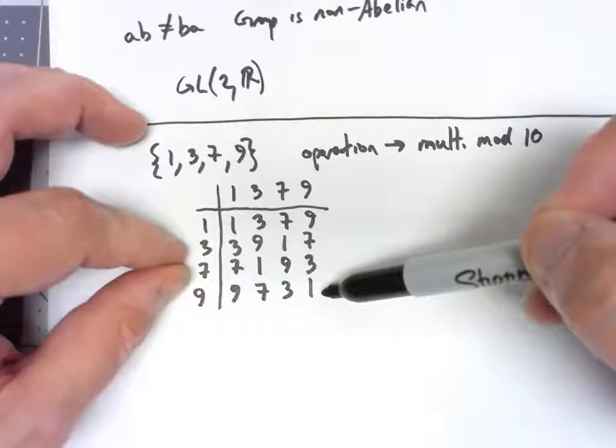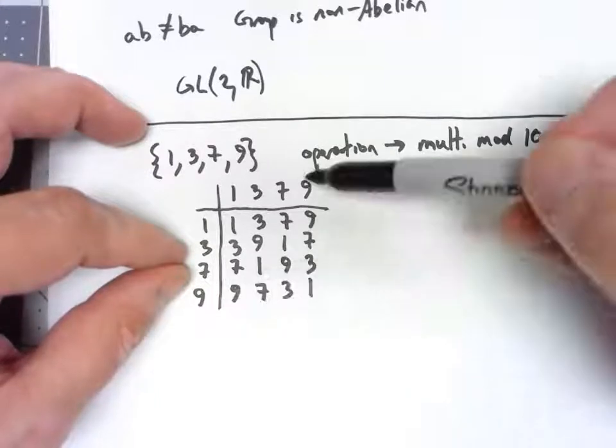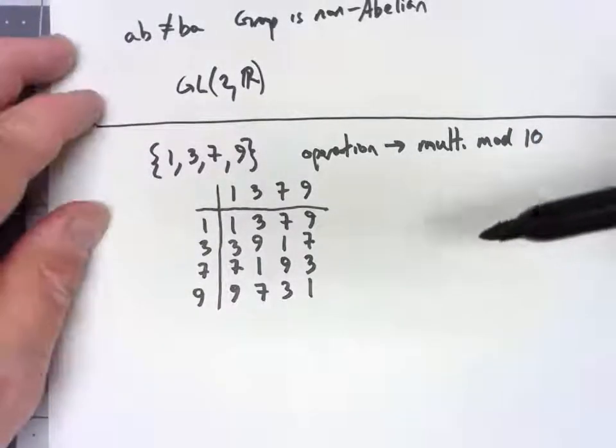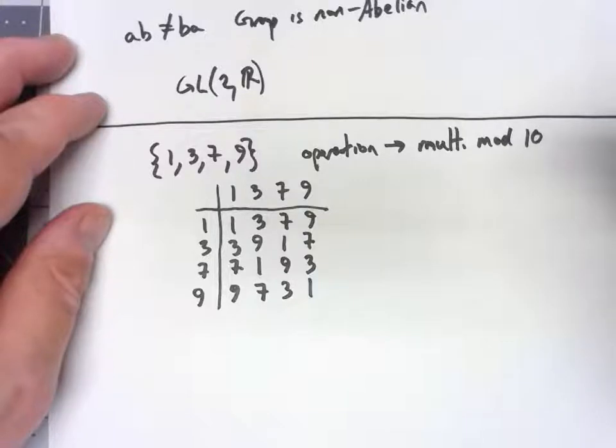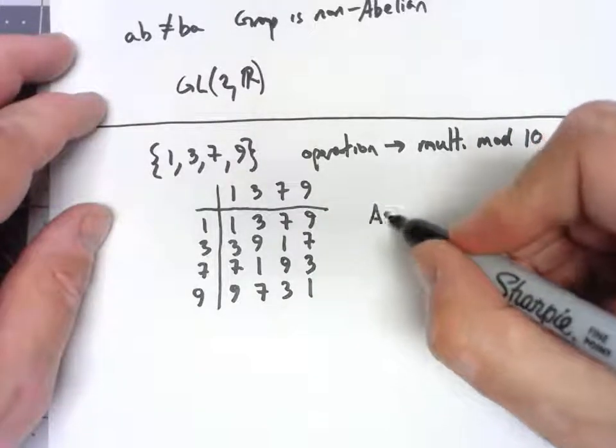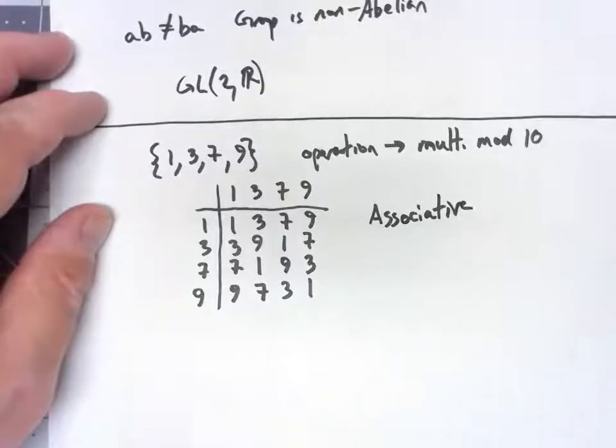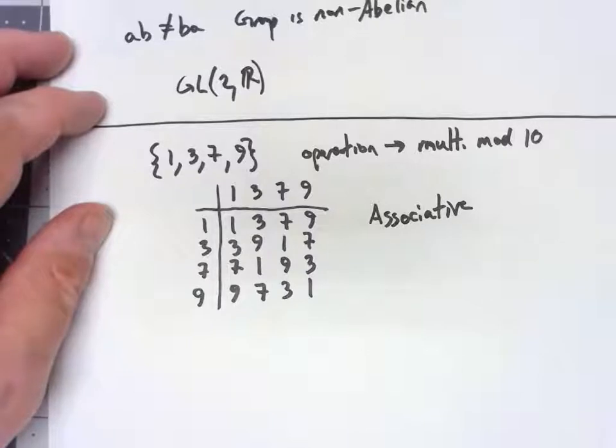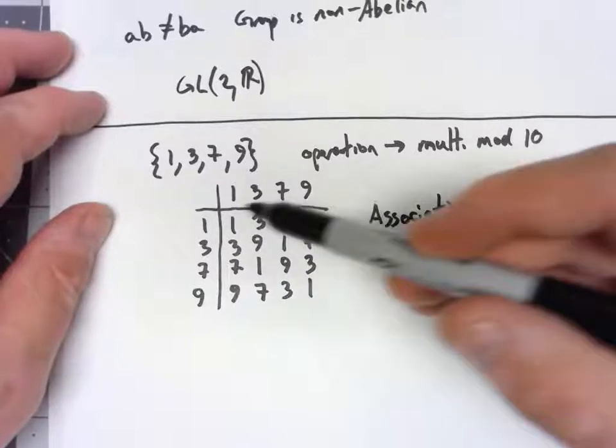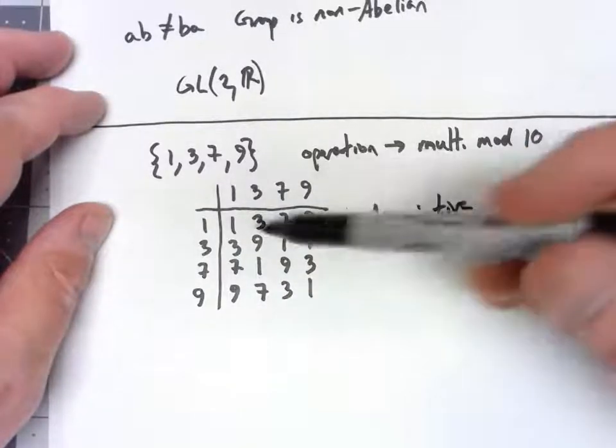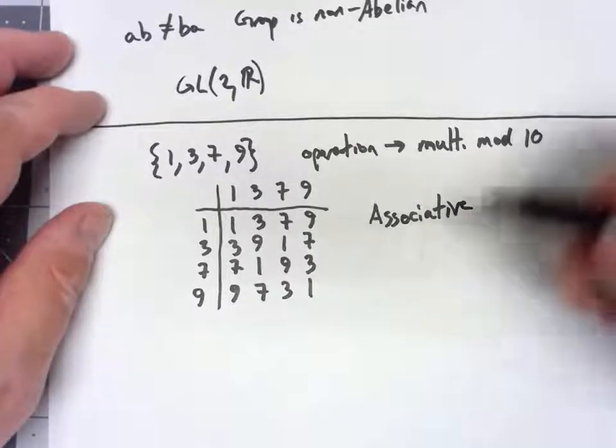9 times 9 gives us 1, so 9 is its own inverse. This thing is associative because it's based on regular multiplication, and we know multiplication is associative. We just showed it had an identity and it had inverses, so therefore this is a group.